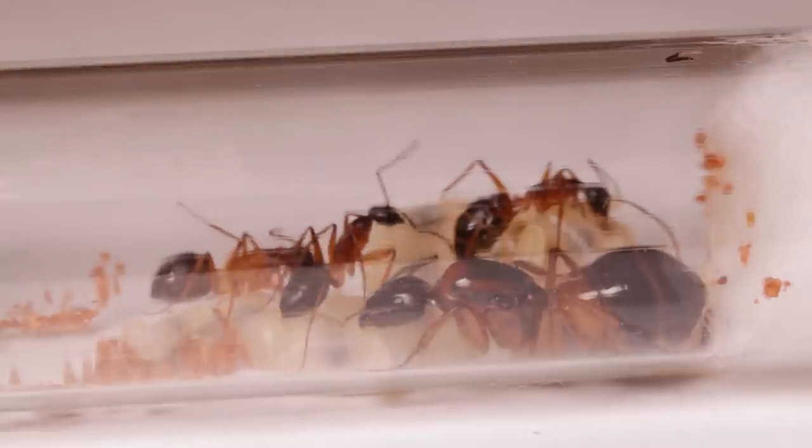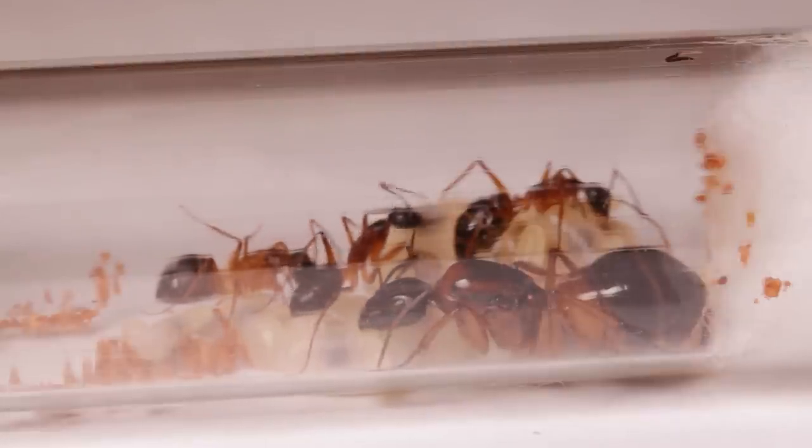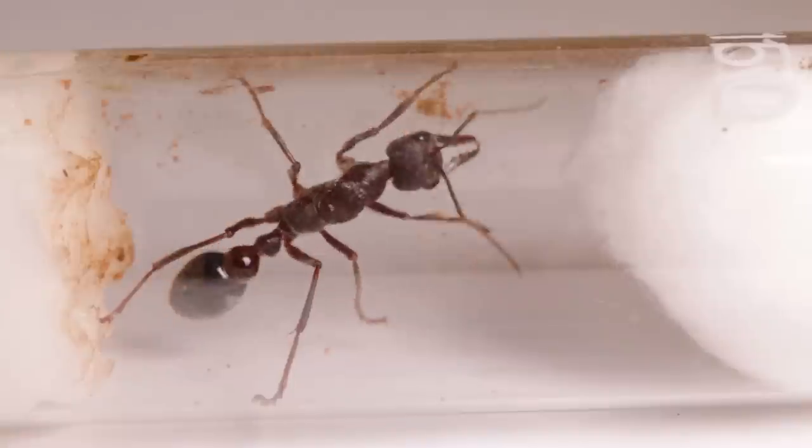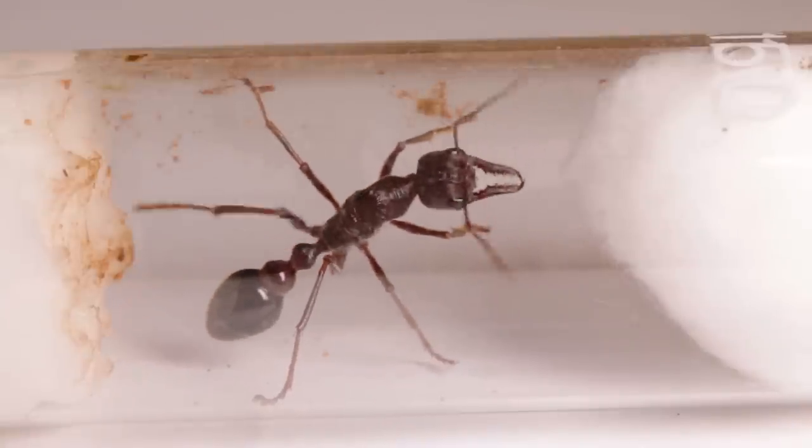For larger ones like sugar ants, you might want up to 16 millimeters. And for something like bull ants, even larger still.